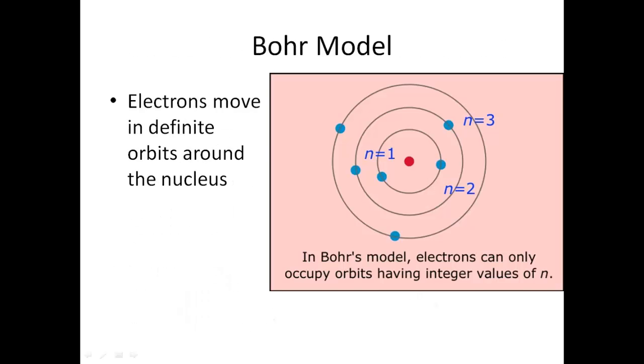Another early model, and one that is often used to this day, though it's not entirely accurate, is the Bohr model. Niels Bohr proposed this model to explain how energy is absorbed by atoms and light is emitted from electrons. The light, the energy in an atom, causes the electron to change what they call orbitals. In this model, electrons move in definite orbits around the nucleus.